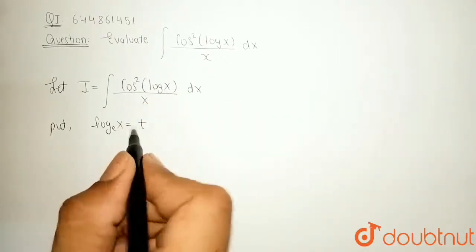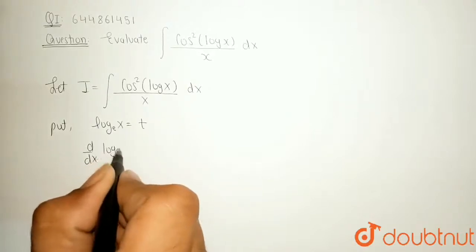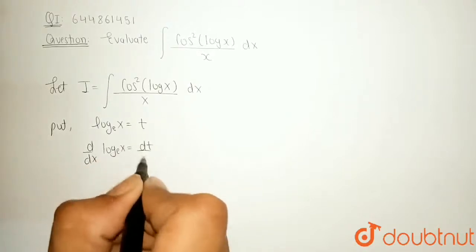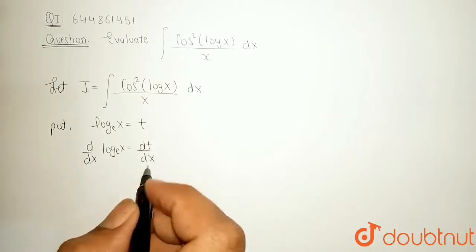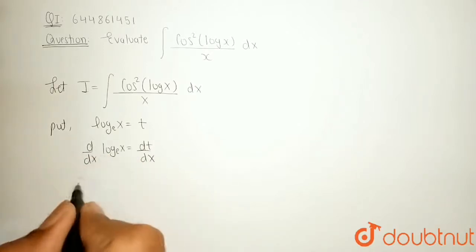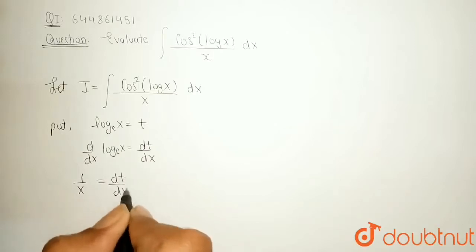Now, differentiate both sides with respect to x. So, d by dx of log of e base x is equal to dt by dx. So, d by dx of log of x is 1 upon x which is equal to dt by dx.